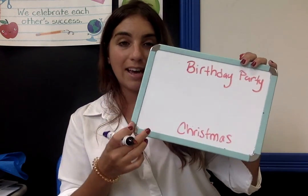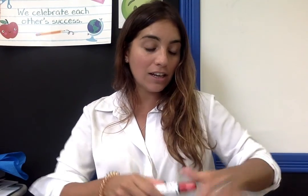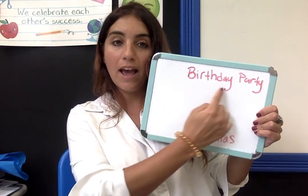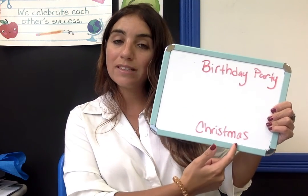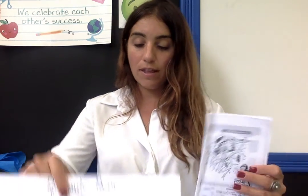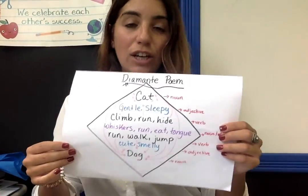Those will be the two things at the top and the bottom of your diamante poem. If you are a Toucan, your diamante poem will be about a birthday party and about Christmas. If you are a Cardinal, your diamante poem will be about Cinderella at the top and Cinderella at the bottom. So let's take a look at this example.